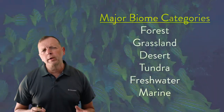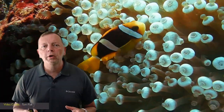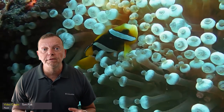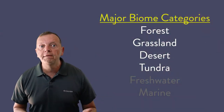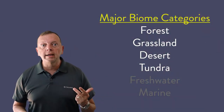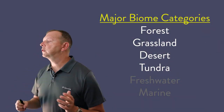The freshwater and marine biomes refer to the vegetation and animals that live either in freshwater areas such as lakes and ponds, or in our oceans. We're going to spend our time on the four land-based biomes of the forest, grassland, desert, and tundra.